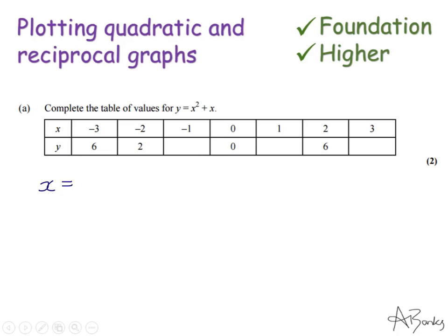The negative values are often the hardest ones to do, so I've got to figure out what x squared plus x is. So x squared, that's going to be minus 1 times minus 1, which is 1, plus x, which is minus 1. So that gives me 0.